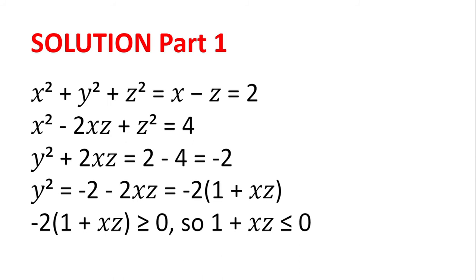Now, since y squared is a square, it cannot be negative, so it's 0 or above. And so, minus 2 multiplied by 1 plus xz is also at least 0. And because minus 2 is negative, then 1 plus xz must be 0 or also negative to get the expression to be greater or equal to 0. And so, 1 plus xz is less than or equal to 0.